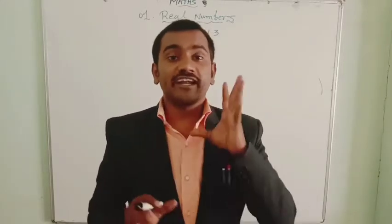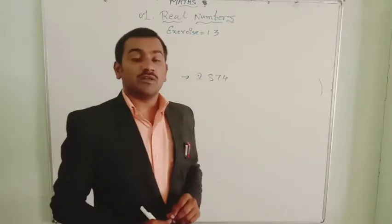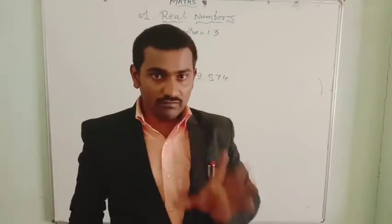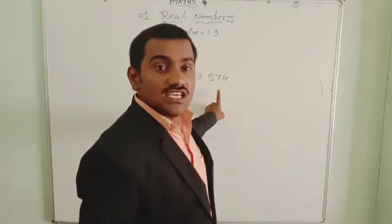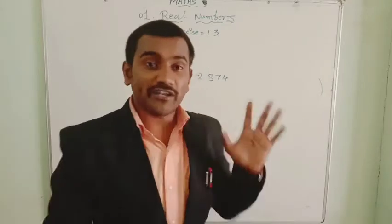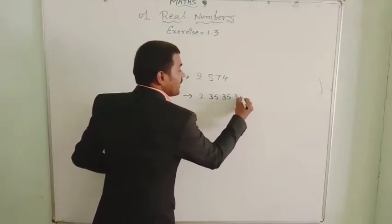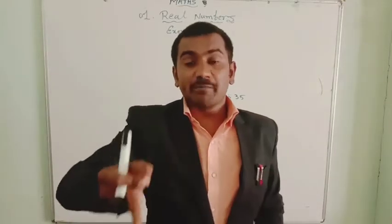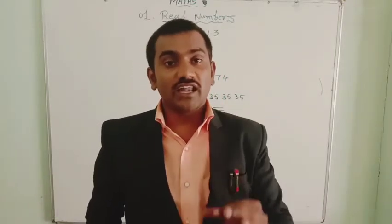Let's see what a terminating decimal number is. For example, 2.874 — the digits after the decimal point are countable, so it is a terminating decimal number. A non-terminating repeating decimal number, like 2.353535, can be represented as 2.35 bar. These two types of decimal numbers are known as rational numbers.